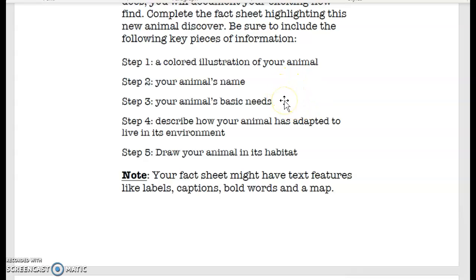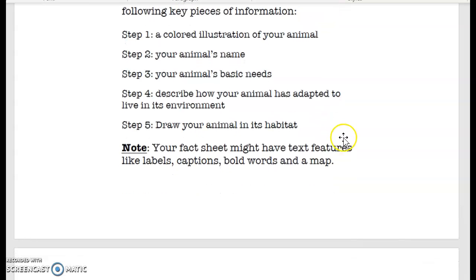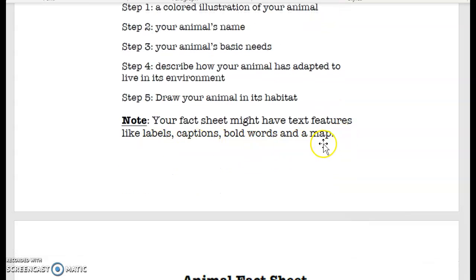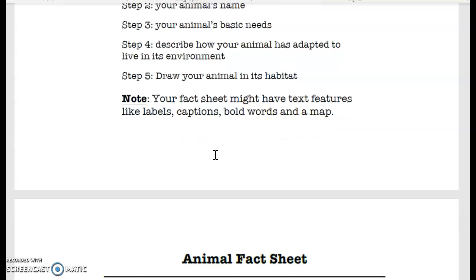You are going to write about your animal's basic needs. What does it need to live? You are going to describe how your animal has adapted to its environment, where it lives, and then you're going to draw your animal and its habitat. Some great things you can add are text features like labels or maybe have some bold words in your fact sheet or draw a map of the habitat or have some captions to describe the picture.